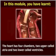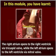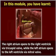The heart has four chambers: two upper, called atria, and two lower, called ventricles. The right atrium opens to the right ventricle via the tricuspid valve, while the left atrium opens to the left ventricle via the mitral valve.